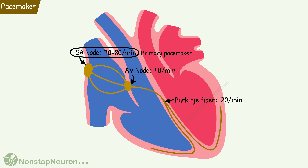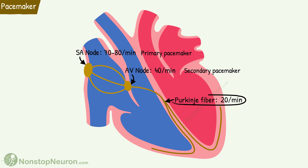If the fastest tissue does not function properly, the next fastest tissue becomes the pacemaker. So if the SA node does not function properly, the next fastest — the AV node — sets the pace of the heart. The AV node is called the secondary pacemaker. And if the AV node also fails, the Purkinje fibers become the pacemaker, so they are called the tertiary pacemaker.